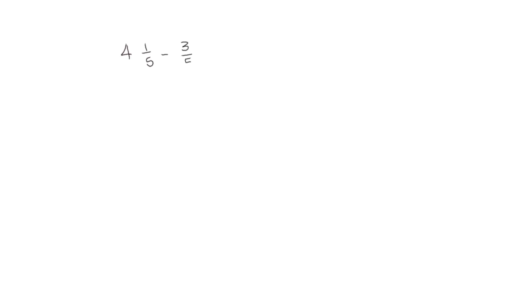Let's look at a different one. We have 4 and 1 fifth minus 3 fifths. Again, the whole number in the second number is 0, so we do 4 take away 0. Then we look at the fifths and ask: can we do 1 fifth take away 3 fifths? No, we don't have enough fifths — we only have 1 to subtract 3.